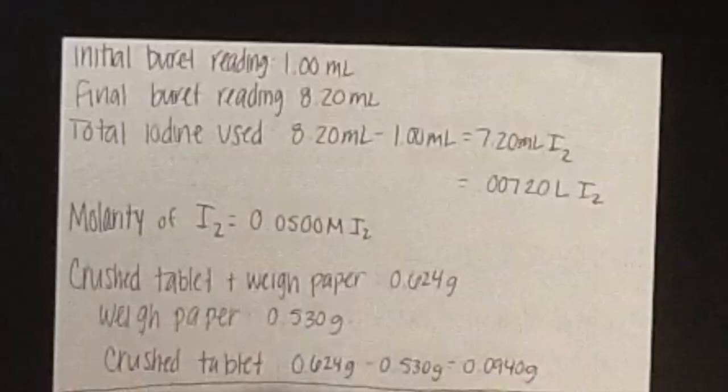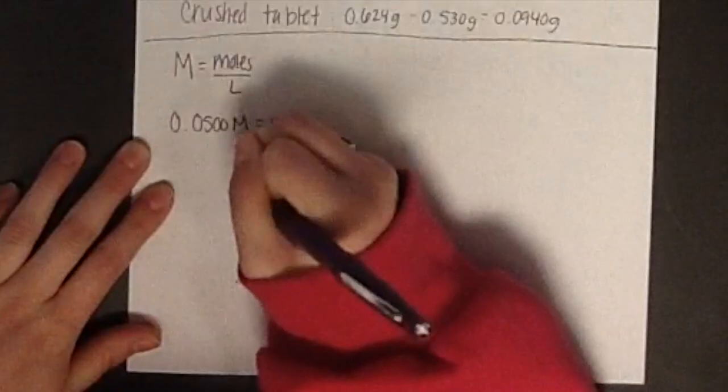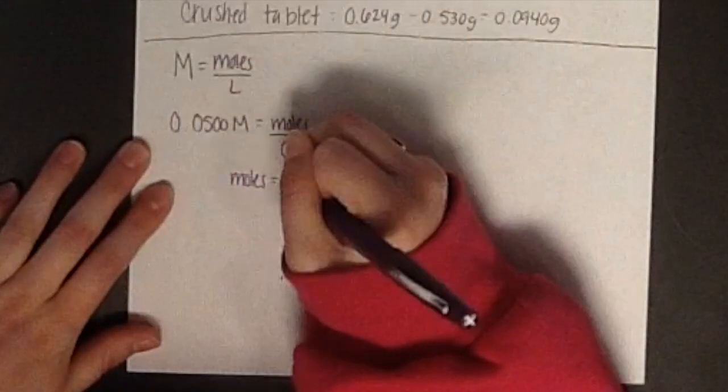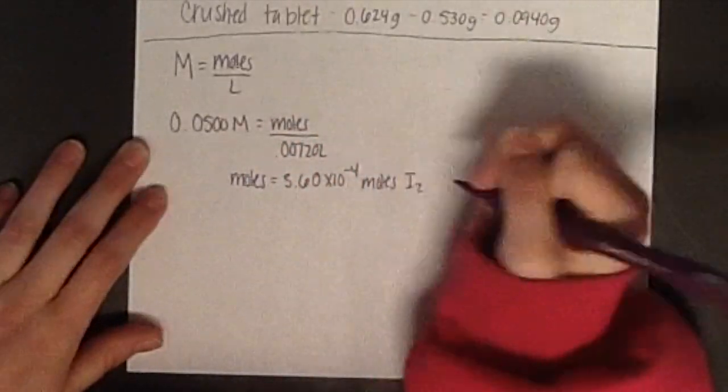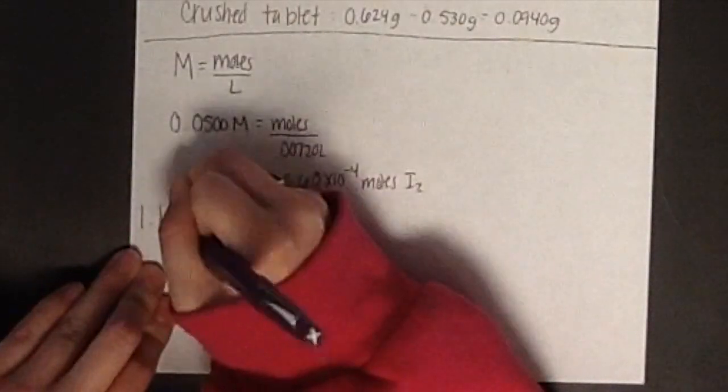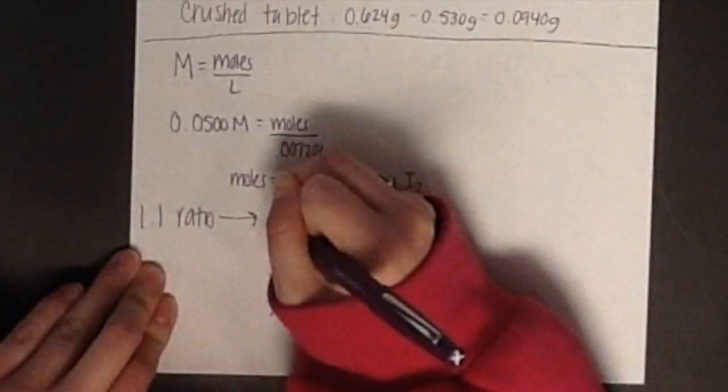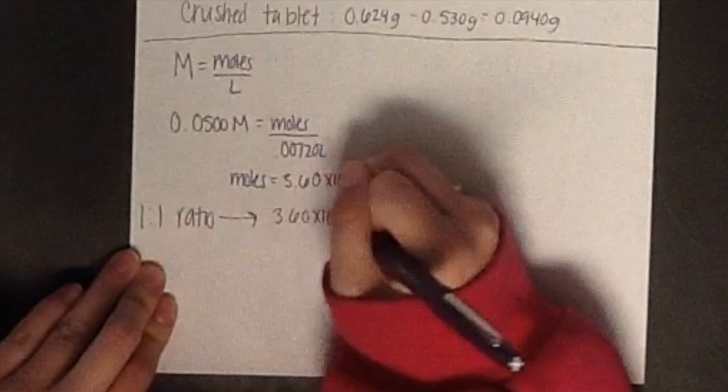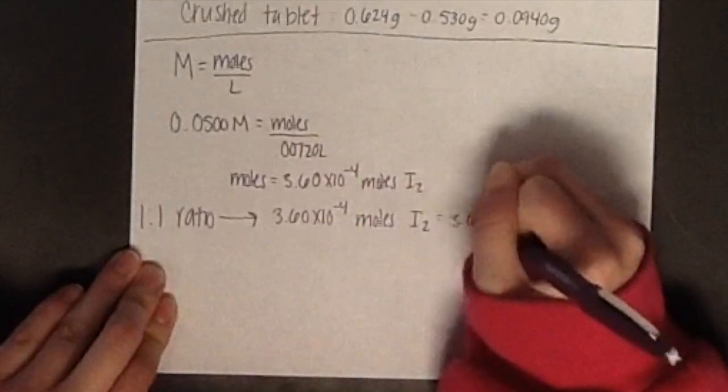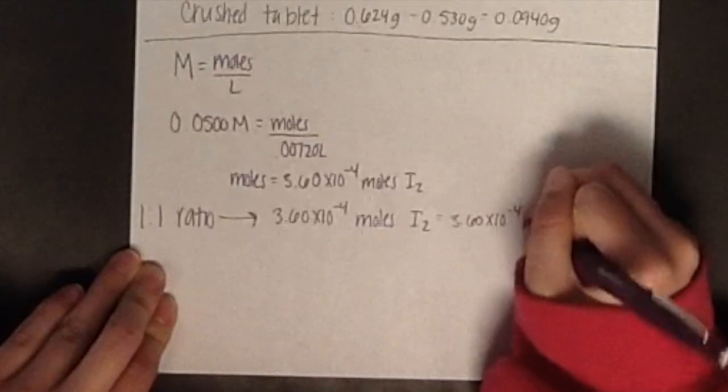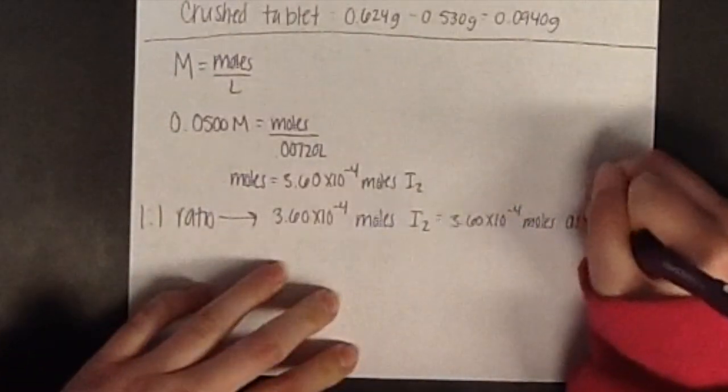Here are some values that you will need for the following calculations. First, we will need to calculate the number of moles of iodine. Using the molarity and volume of iodine used, the moles can be calculated to equal 1.60 times 10 to the negative 4 moles. There is a 1 to 1 ratio of iodine and ascorbic acid, so the number of moles of iodine equals the number of moles of ascorbic acid.